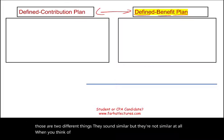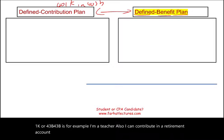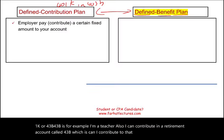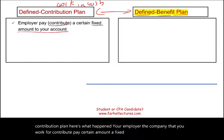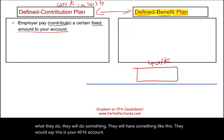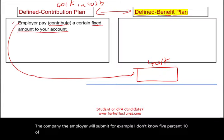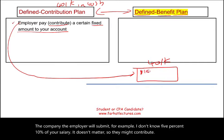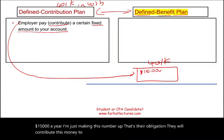When you think of a defined contribution plan, think of a 401k or 403b. In a defined contribution plan, the employer — the company you work for — contributes a fixed amount to your account. They might contribute 5% or 10% of your salary. For example, $15,000 a year — I'm just making this number up. That's their obligation. They will contribute this money to your 401k account, and that's all they do.